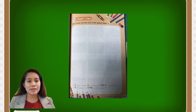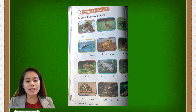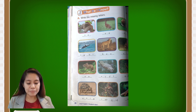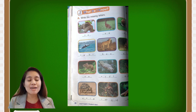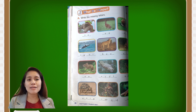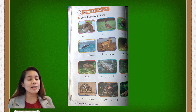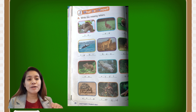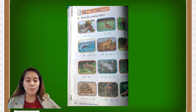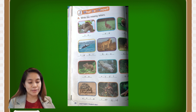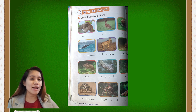On page 70, you are going to write the missing letters. We have animal pictures with some missing letters, and you have to fill in the correct letters to complete the name of the animal. We have 12 animals, so you can write the correct letters in the slots.